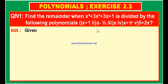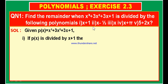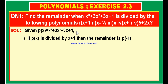Here is the solution. The given polynomial p of x is equal to x cube plus 3x square plus 3x plus 1. In the first bit, this polynomial is to be divided with x plus 1. If p of x is divided by x plus 1, then using the remainder theorem, the remainder is p of minus 1. Taking plus 1 to the other side gives minus 1, so in the place of x we substitute minus 1.